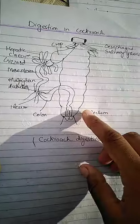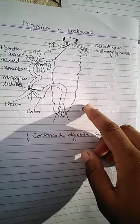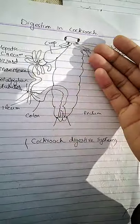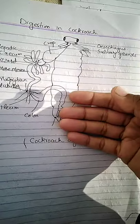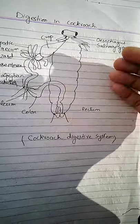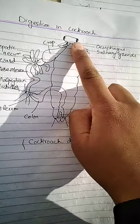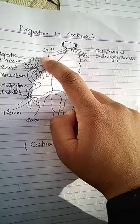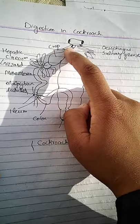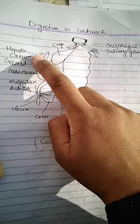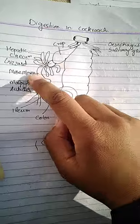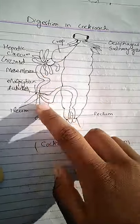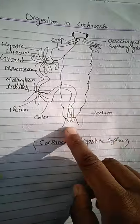Here you can see the diagram of the digestive system of the cockroach. This is the head of the cockroach — this is a literally dissected cockroach. This is the esophagus; here salivary glands are present. This is the crop. These are hepatic caeca, gizzard, mesentron, Malpighian tubules, ileum, colon, and rectum.